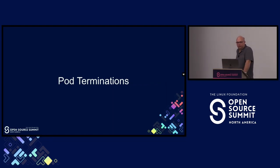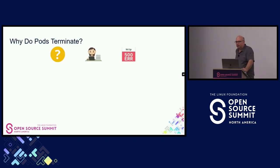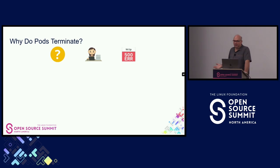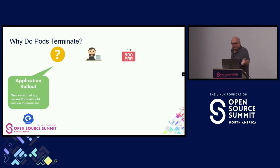Now let's talk about pod terminations. Have you ever gotten a call from an application developer debugging a 500 error, saying there's no problem in the app but somehow Kubernetes is returning the 500? Maybe they've done some troubleshooting and found the 500 happened when Kubernetes terminated their pod. They ask: why did my pod get terminated? It should never terminate once I run it. But the reality is with Kubernetes, there are lots of normal operations that will cause pods and nodes to go down. The most simple one is when you're doing a new application rollout.